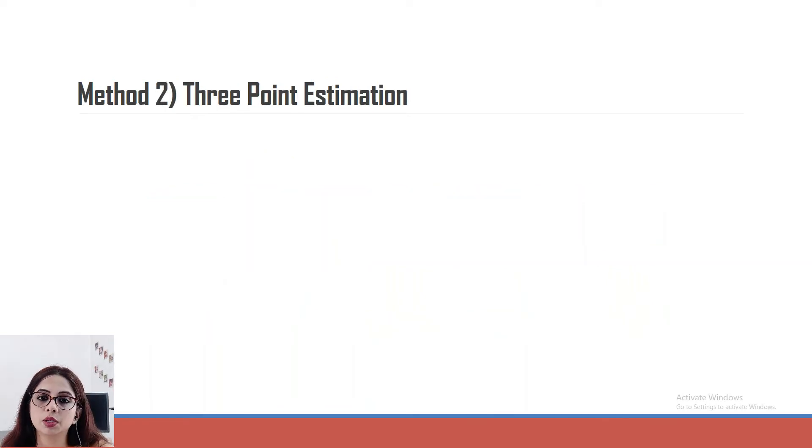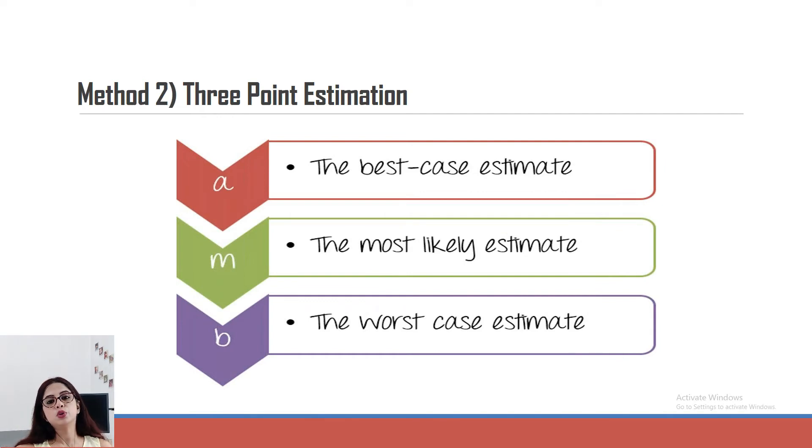Similarly, we have something called three-point estimation. You can make estimation based on the best case estimations. Whenever you're filling in any estimation sheet, there are three different columns - best case, most likely estimation, and worst case. In the best case, you have to tell them what is the minimum time you think that you need to complete this particular task. Let's say you think in two hours I can do it.